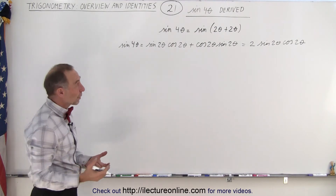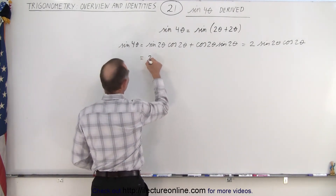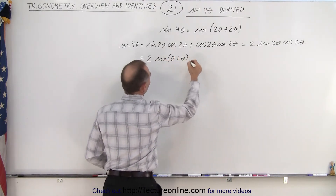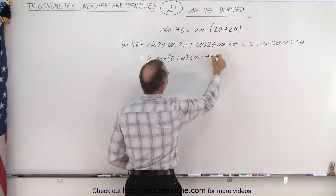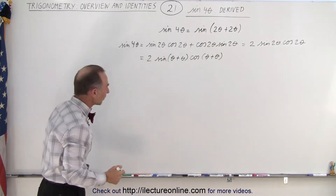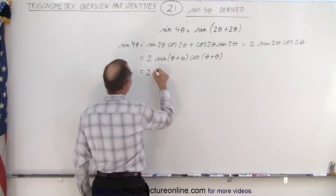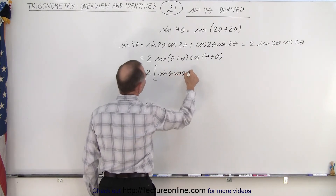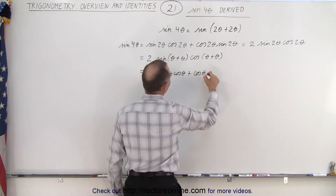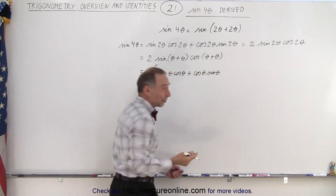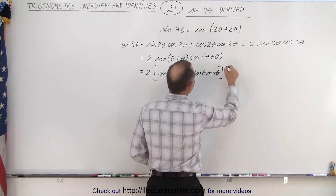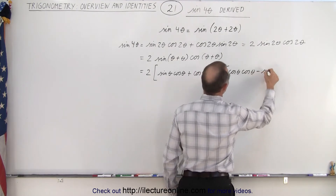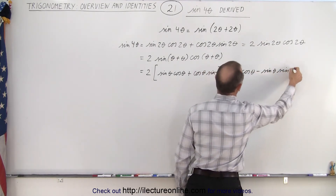Each one of those can be written as a sum of two angles. So this can be written as 2 times the sine of theta plus theta times the cosine of theta plus theta. Again we use the identity of the sum of two angles, so this becomes 2 times the sine of the first angle times the cosine of the second angle plus the cosine of the first angle times the sine of the second angle, times the cosine of theta times the cosine of theta minus the sine of theta times the sine of theta.